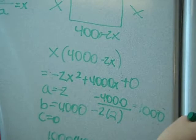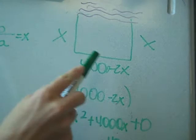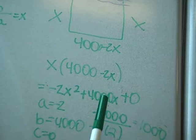So we drew a diagram of the farmer's area with the river or lake on that side. Then to find the area of the rectangle, we did x times 4,000 minus 2x. Then we distributed the x to get this equation.